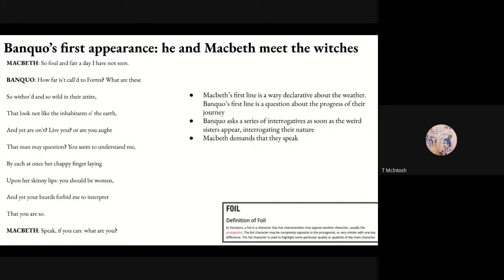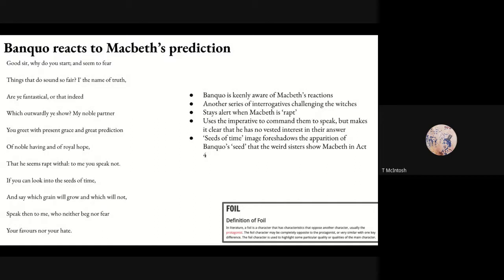Macbeth demands, 'Speak if you can. What are you?' — he immediately wants an answer. Banquo wants to know what they are. Then, after the witches hail Macbeth, Banquo says, 'Good sir, why do you start and seem to fear things that do sound so fair?' Banquo is keenly aware of Macbeth's reactions; for the rest of this scene he tells us how Macbeth is acting. Macbeth increasingly abstracts out on stage — staring, hair standing on end, confused — and Banquo, like a detective, observes and reports.